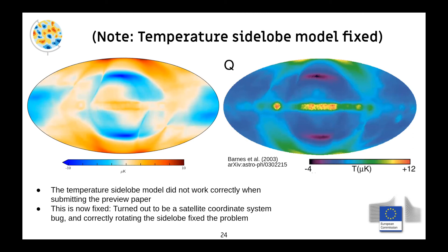From the previous paper, one of the main issues was the temperature sidelobe model. We didn't have it correct before due to a coordinate system issue, but now we're able to reproduce it through auxiliary output. The auxiliary output from Commander directly matches the predicted sidelobe output from the WMAP team in 2003. Good news for us.